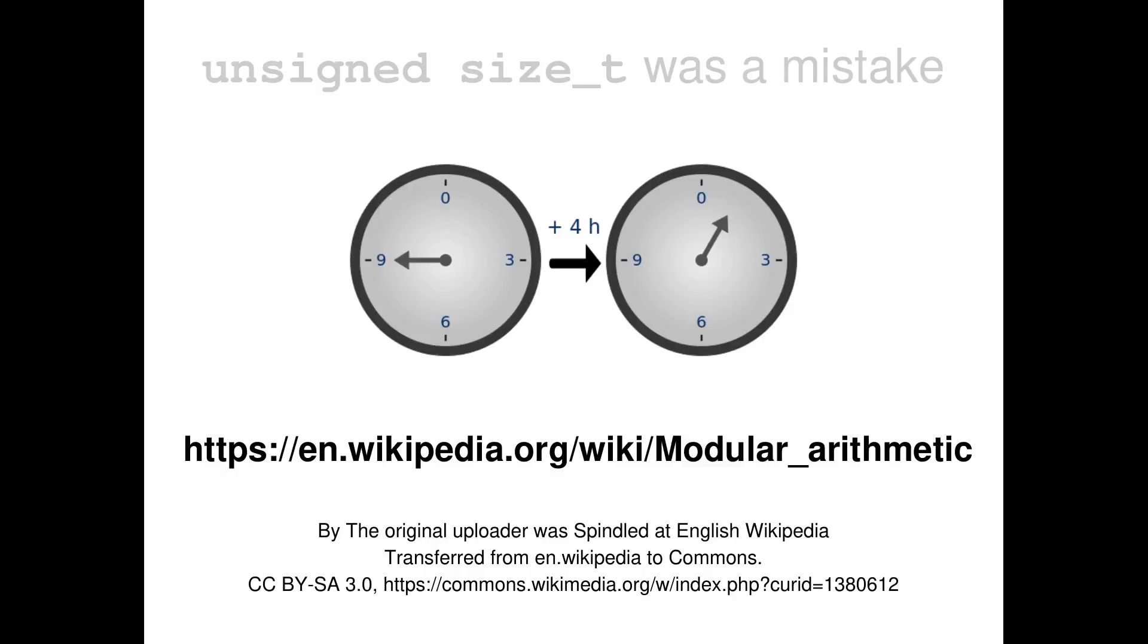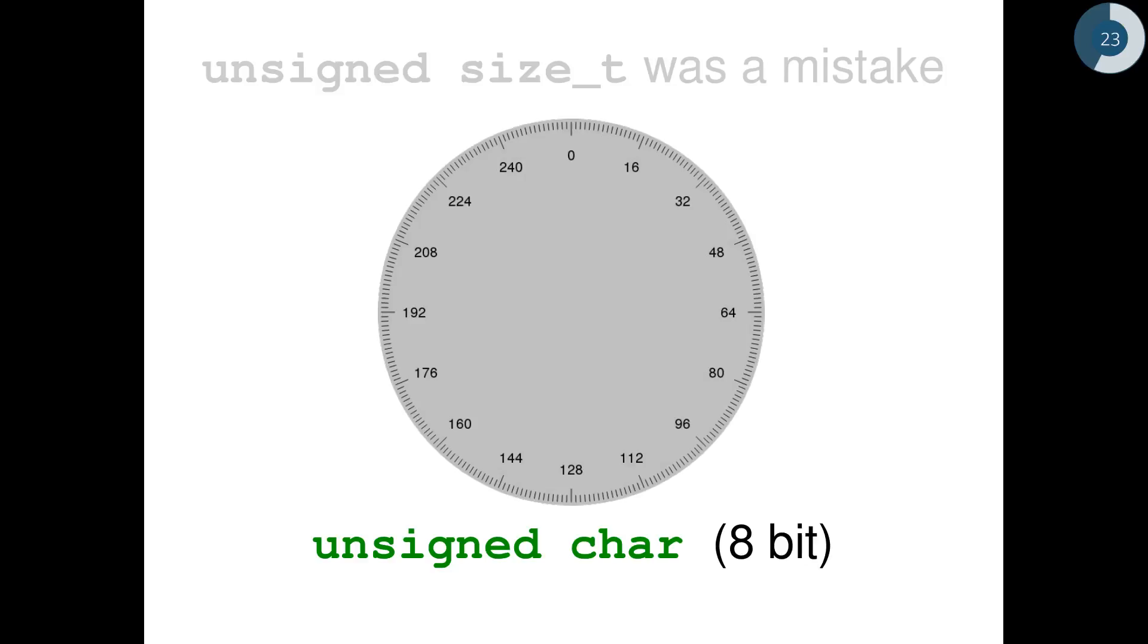But a very well-known case is the analog clock. If you have a clock with the hour hand pointing to 9 and you wait 4 hours, the hour clock hand will be pointing to 1. And this means that 9 plus 4 on the clock is equal to 1. For a C++ compiler, an unsigned character, if on that platform the character is 8-bit, is exactly like a clock with 256 marks. And, for example, if you add 30 to the value 240, you end up with the result 14.